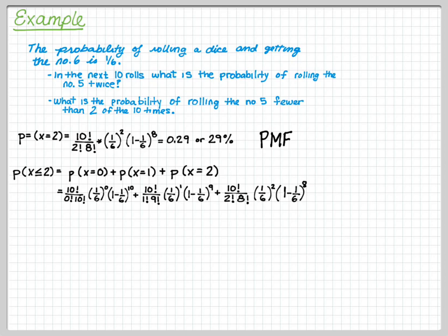That means the probability that x equals 0 plus the probability of x equaling 1 plus the probability of x equaling 2. This is a cumulative mass function, and it can be solved by adding the three quantities. And the final answer would be 78%.